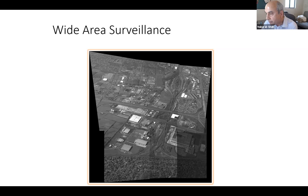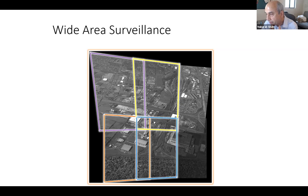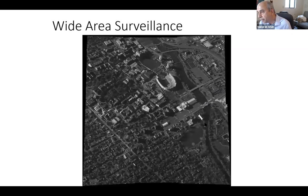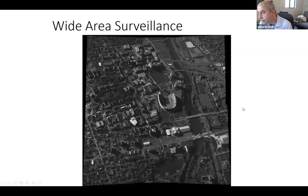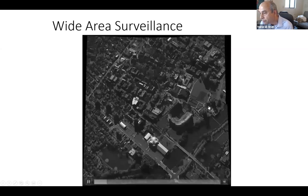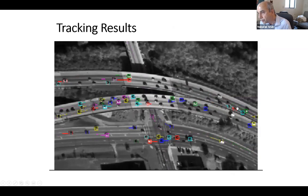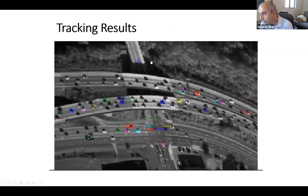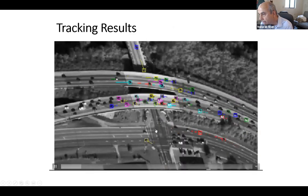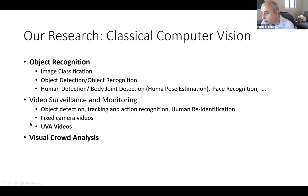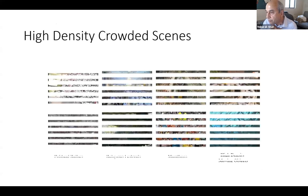Related to that is wide area surveillance — six cameras stitched together covering a big area around the Ohio State campus where there's a football stadium. We can track vehicles across this wide area. Even when a vehicle goes under a bridge, we maintain the same ID. The color indicates the vehicle's ID.